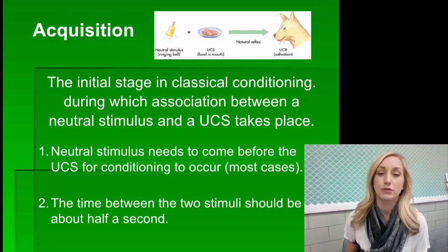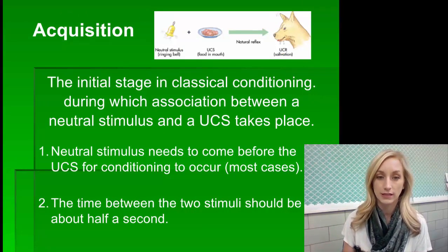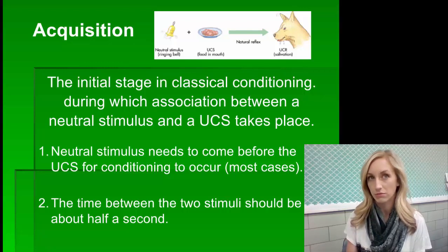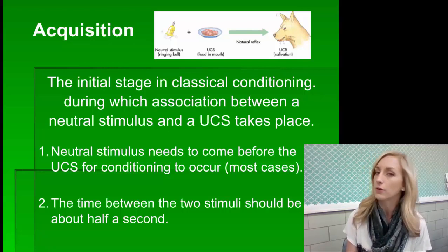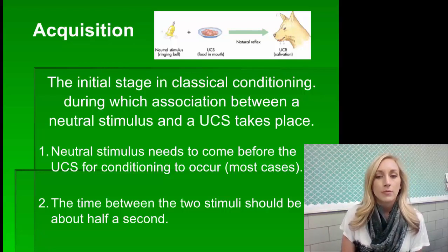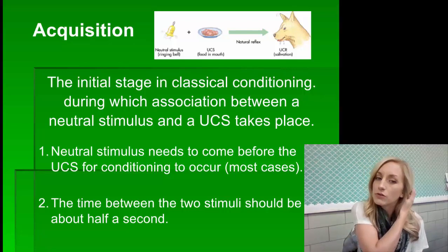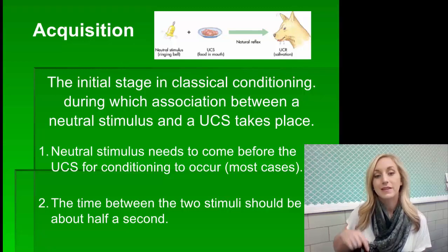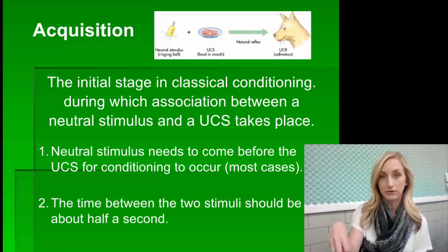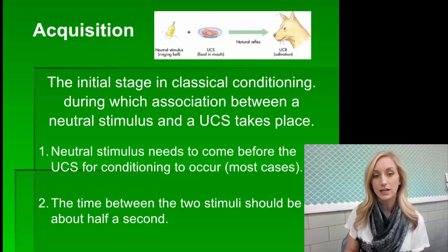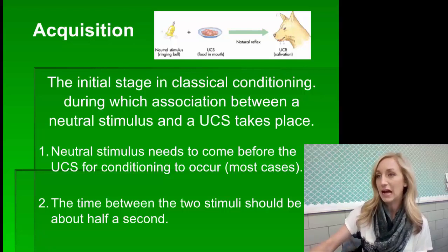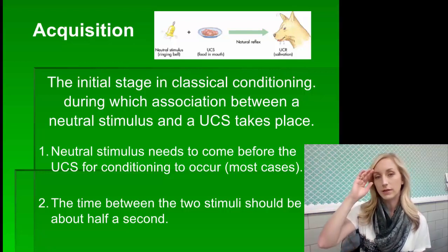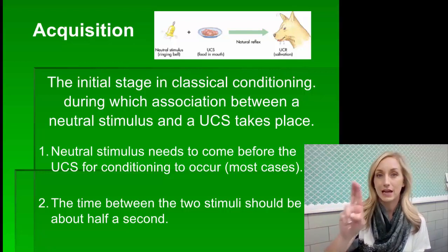A couple of things about acquisition. First, the neutral stimulus needs to come before the UCS for conditioning to occur. In most cases, the neutral stimulus has to come before the UCS. Second, the time between the two stimuli — between the bell and the food, the neutral stimulus and the unconditioned stimulus — should be half a second. It can't be a half hour, five minutes, or even 30 seconds. It's got to be right away in order for the association to happen more easily.